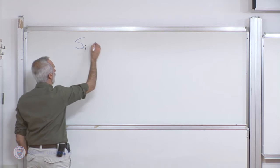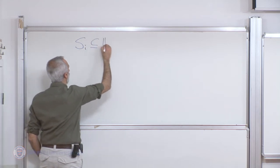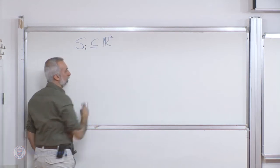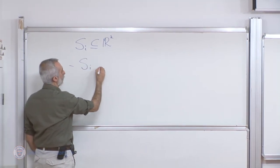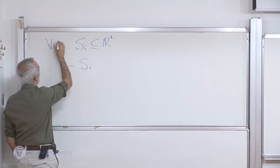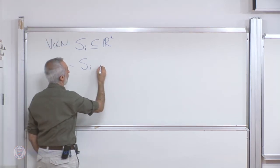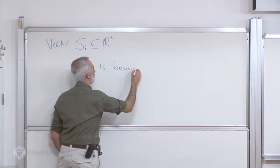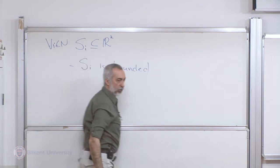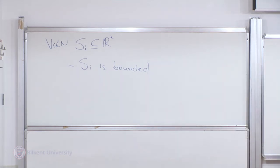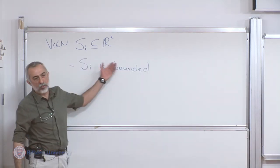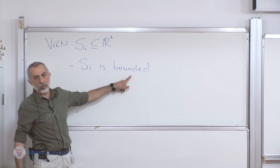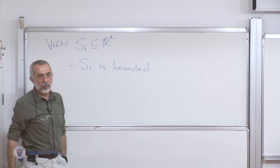So we had S_i subset of R^K. What we had to assume was that S_i is bounded, because if it was not bounded, we had a very simple example where the best responses did not intersect — essentially intersected at infinity. So to avoid those cases, we required the set to be bounded.